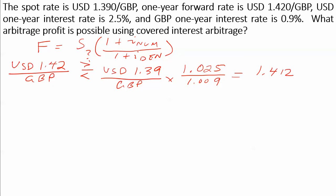Therefore, the forward price is greater than what it should be. We want to follow the principle of buy low, sell high. Would we rather buy British pounds at 1.42 US dollars, or sell? We want to sell, because 1.42 US dollars is a higher price than what it would be under covered interest rate parity. So our strategy will be to sell British pounds at the forward price.